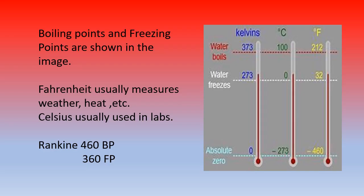Boiling points and freezing points of the Kelvin scale, degrees Celsius scale, and degrees Fahrenheit scale are shown on the image at the right. Water boils at three different numbers for each scale and freezes at three different numbers for each scale. And the absolute zero is at three different numbers for each scale as well.